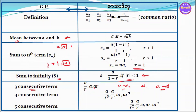We have 4 consecutive terms: a, ar, ar², ar³. We have 5 consecutive terms: a, ar, ar², ar³, ar⁴. So we apply the GP sum formula and the GP formula for each case. Let us know in the comments if you have questions.